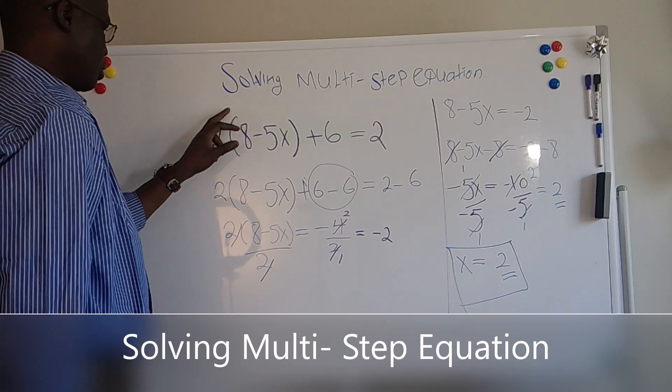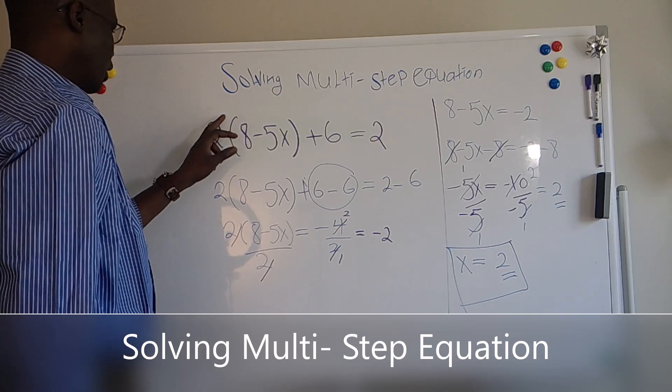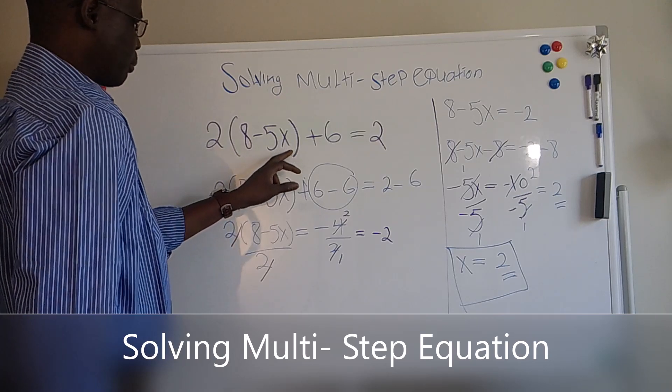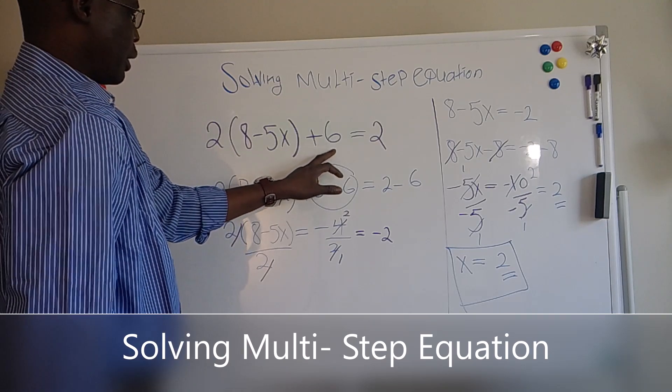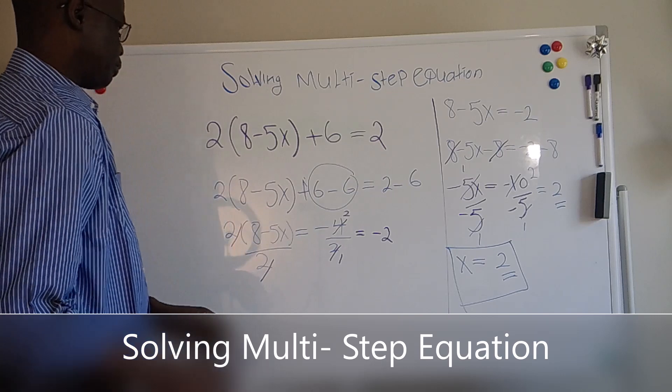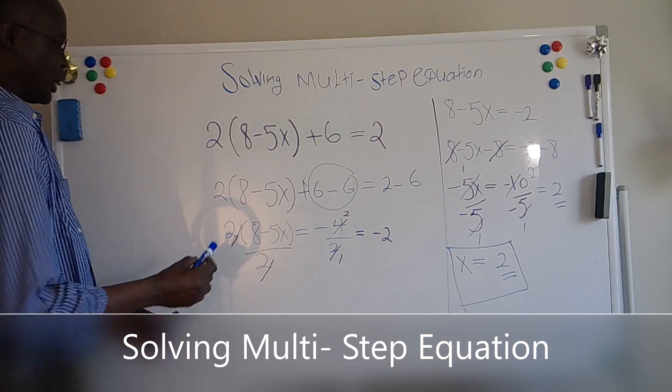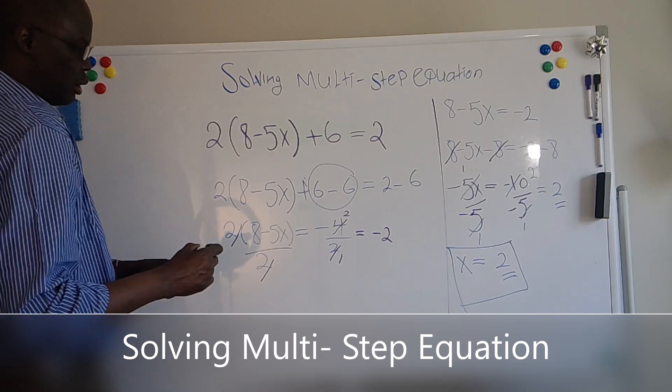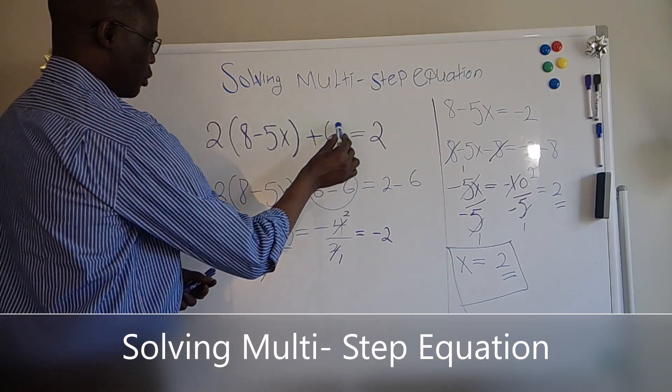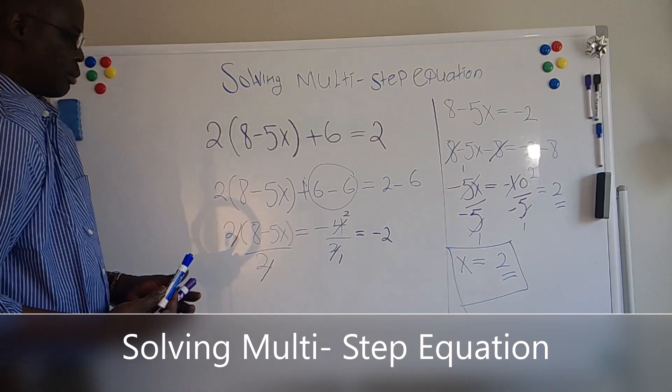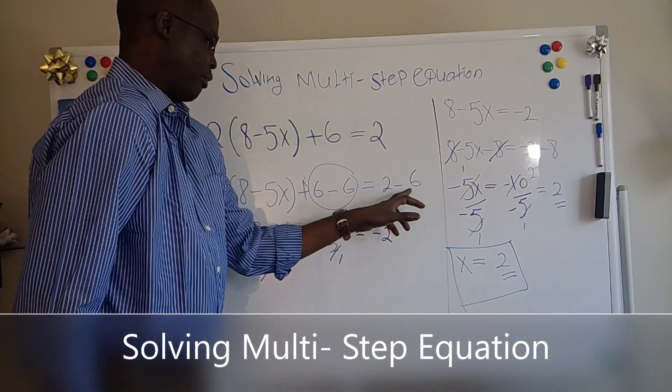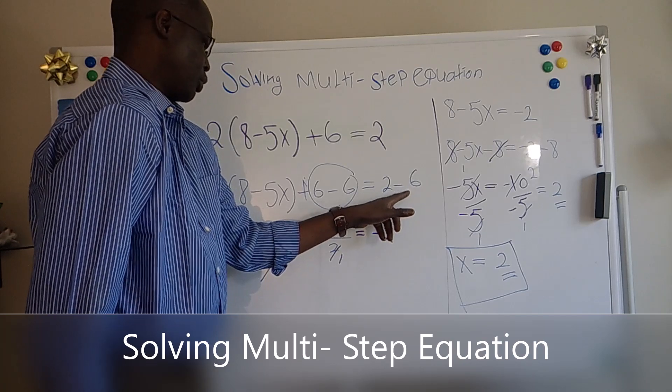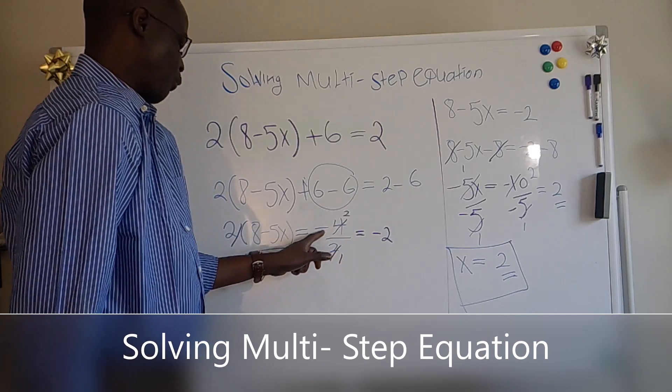We have 2 multiplied to the whole thing, 8 minus 5X plus 6 equals 2. What we have done, the first thing we subtract 6 from both sides of the equation. When you have minus 6, you subtract from 2, you left with minus 4.